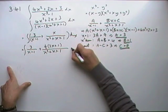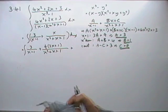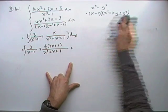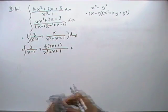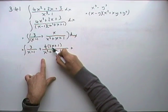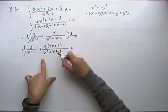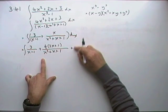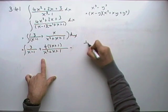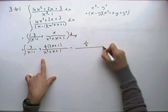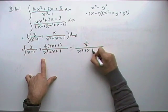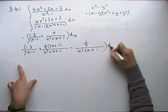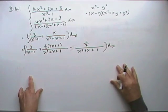But I'll need to correct it. Half of 2x is x, but it should be x plus a half. So I'll have to correct that by taking away a half over x squared plus x plus 1. So that's what it's split up to now: 3 over x minus 1, plus a half of 2x plus 1 over x squared plus x plus 1, minus a half over x squared plus x plus 1.